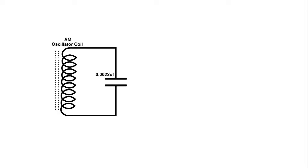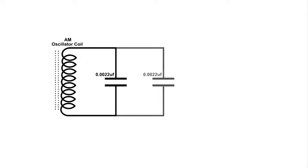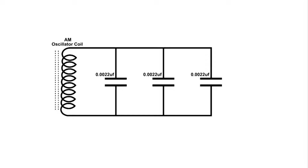In this video I'm going to be changing the resonant frequency of this tank circuit. There are a few ways that you can do that — by changing the coil, adding and subtracting turns of the coil, or changing the core of the coil. But in this video I'm going to be using three capacitors.